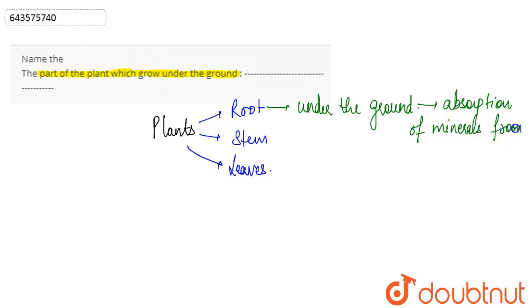from the soil. So the water and minerals are absorbed by the roots from the soil under the ground. Then the part that arises above the ground is simply the stem and leaves at the top.